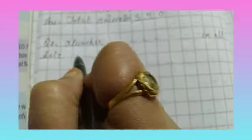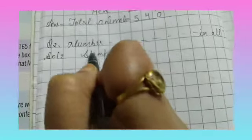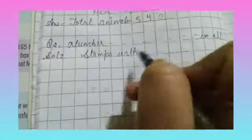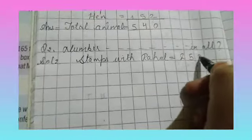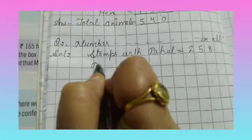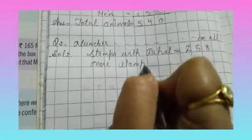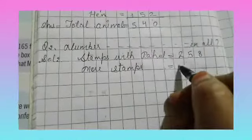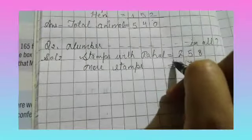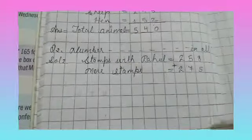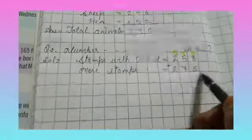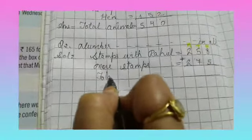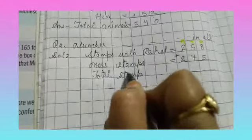Let's copy these questions. How many stamps does Rahul have? His father has 275 more stamps. Now we add this, and with the color pencil help we write the place values: ones, tens, hundreds. We write the total stamps. This is our answer.